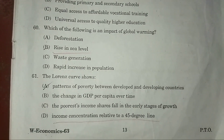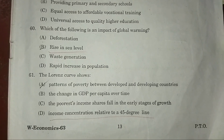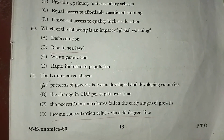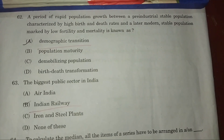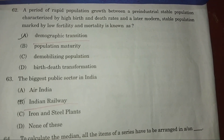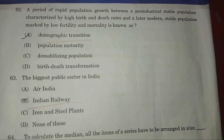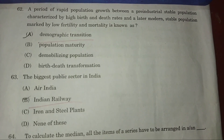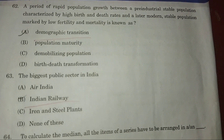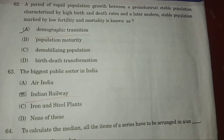Question 61: The Lorenz curve shows — answer: D — income concentration relative to a 45-degree line. Question 62: A period of rapid population growth between a pre-industrial stable population with high birth and death rates and a modern stable population marked by low fertility and low mortality is known as — answer: A — demographic transition.